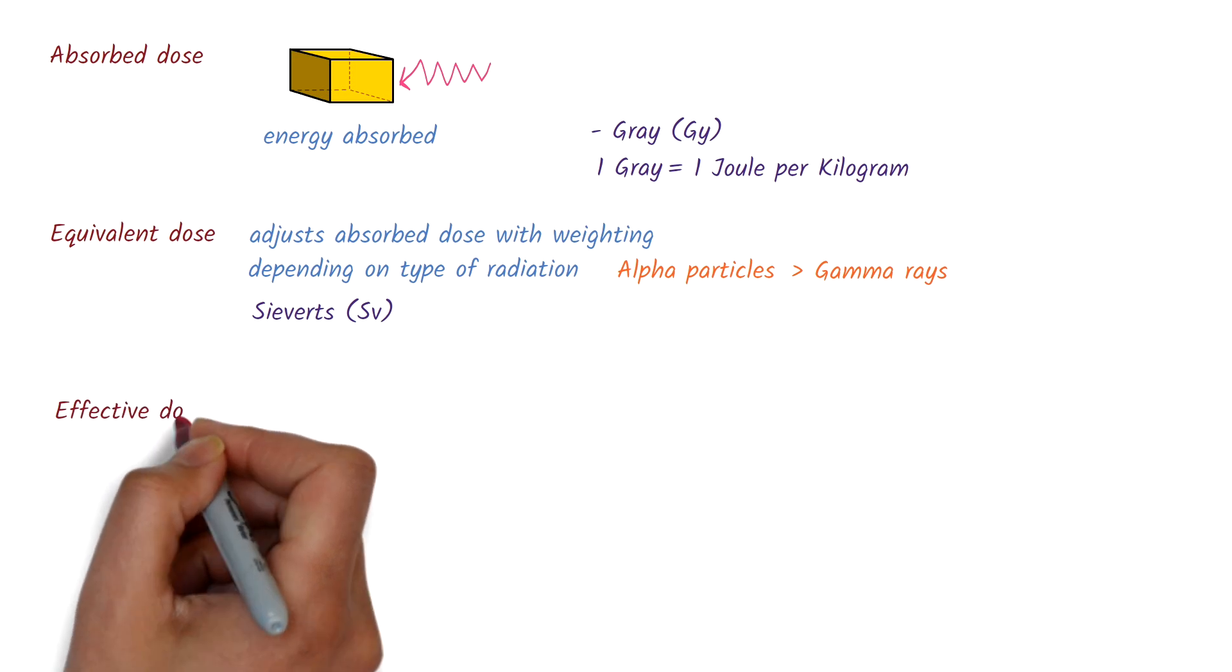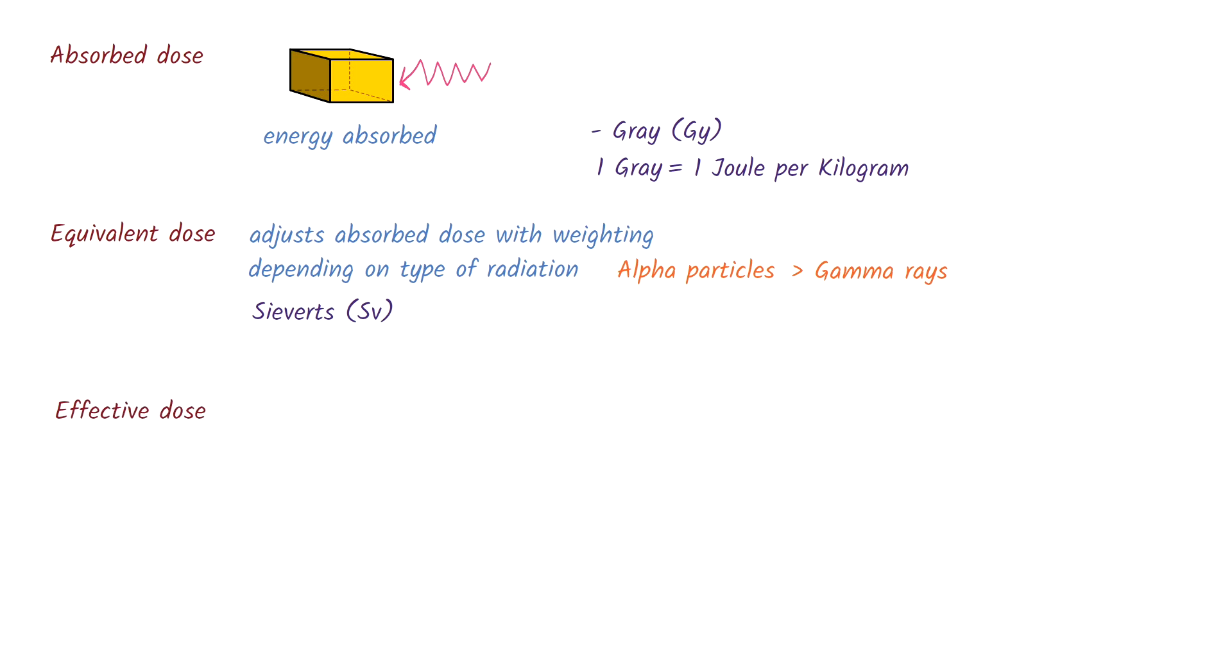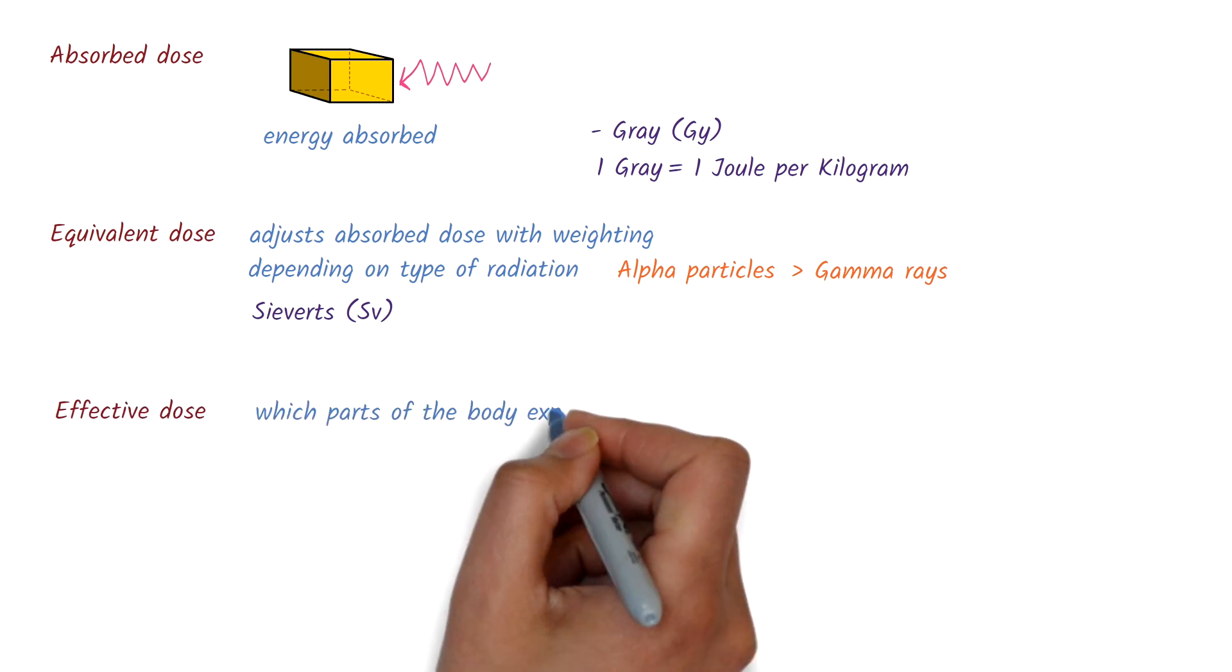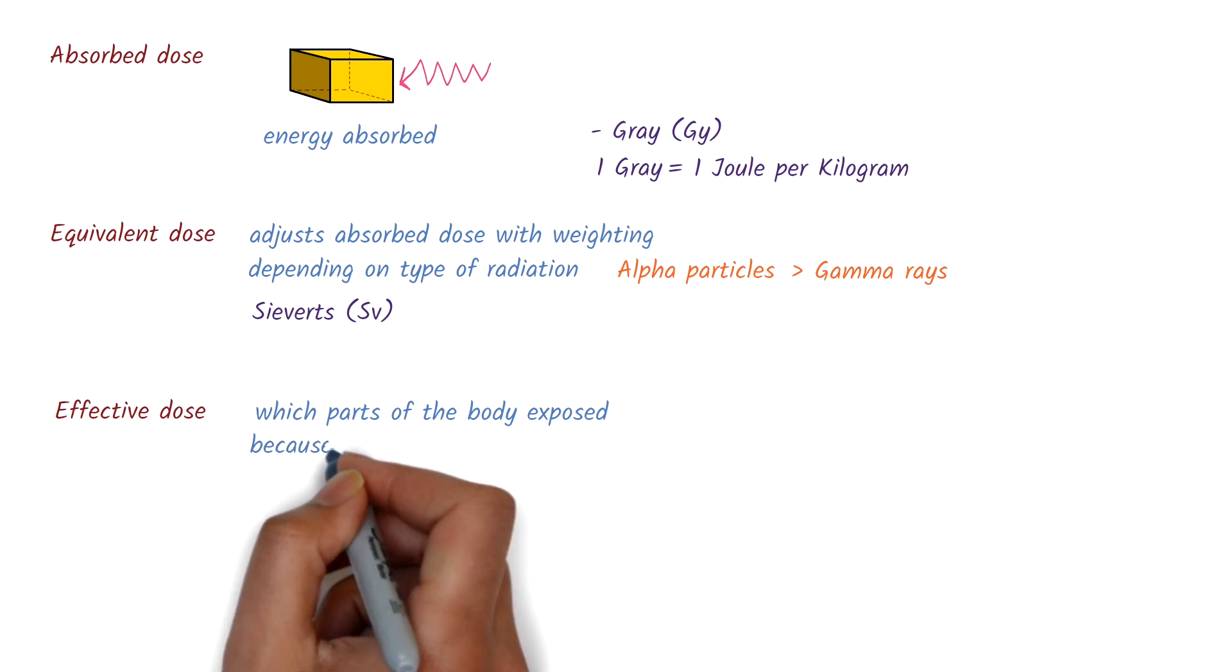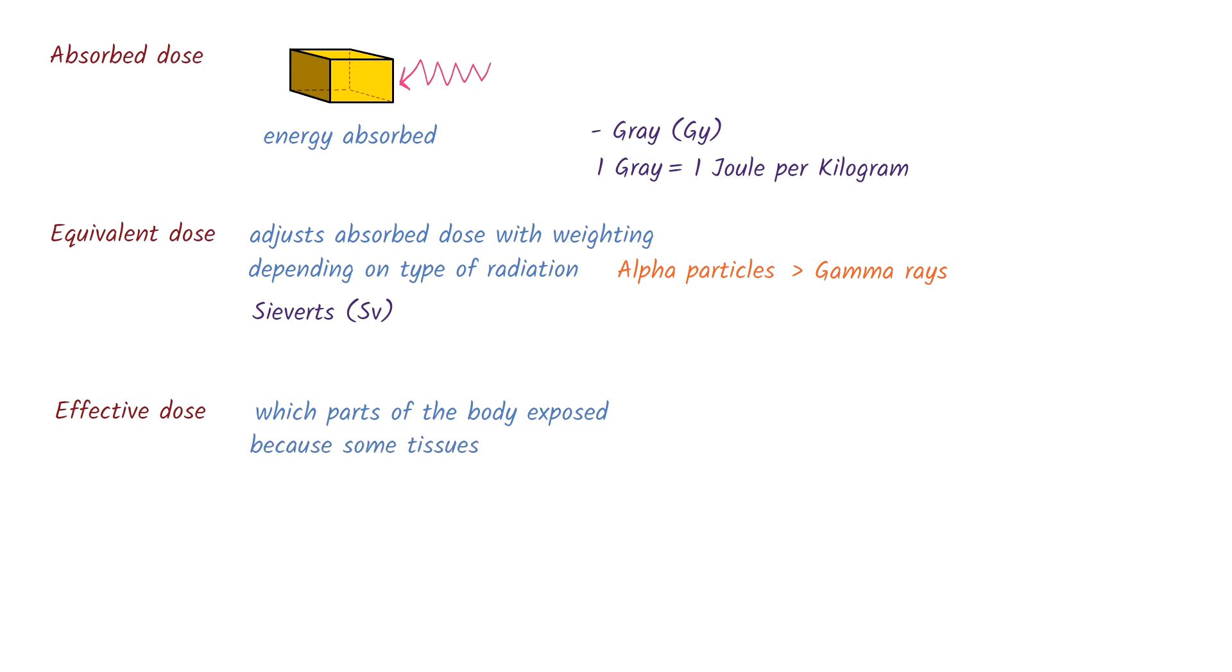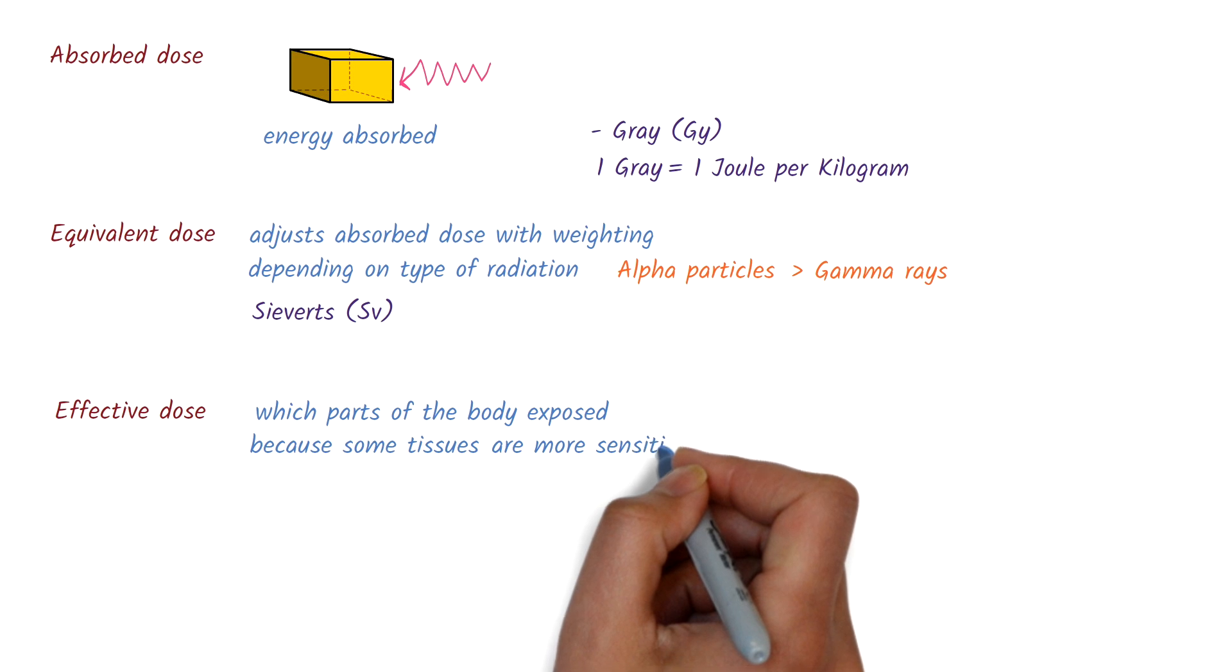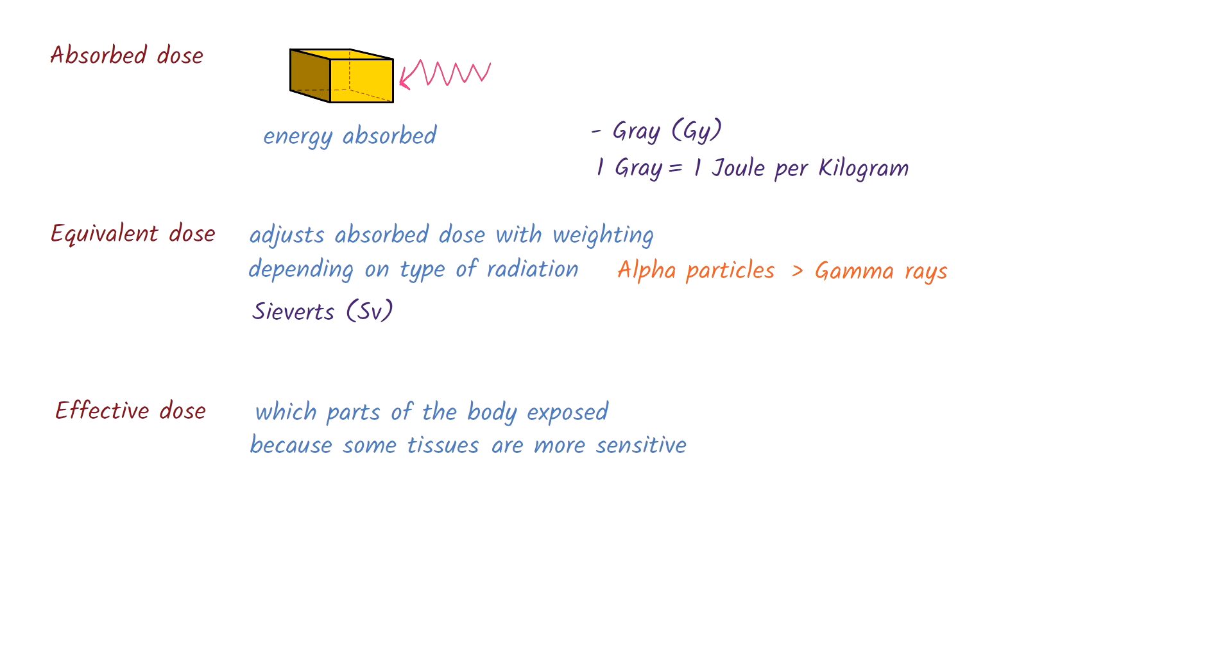Then, there's the effective dose, which goes a step further. It takes into account which parts of the body are exposed, because some tissues, like bone marrow or reproductive organs, are more sensitive to radiation than others. The effective dose is also measured in sieverts.